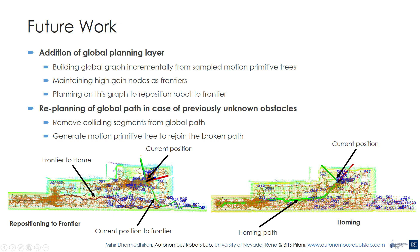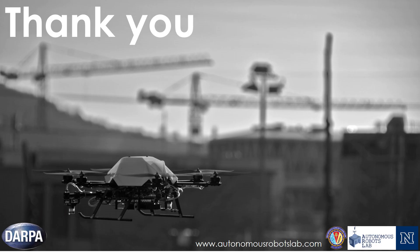The figures at the bottom show the graph, the repositioning, and the homing paths. The second addition is dynamic replanning of the global path in case of obstacles not previously observed. The path segment in collision is removed and replaced by selecting a path from a tree of motion primitives spanned between the vertices which need to be joined. With this, we conclude our presentation. Thank you for attending.